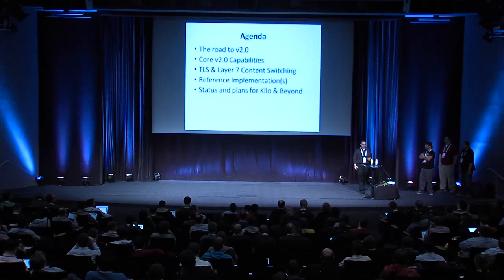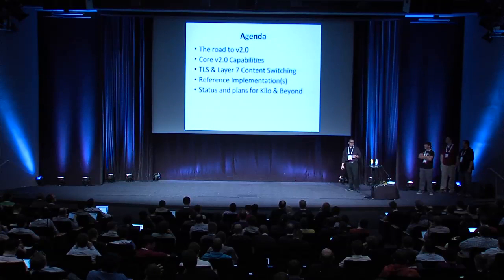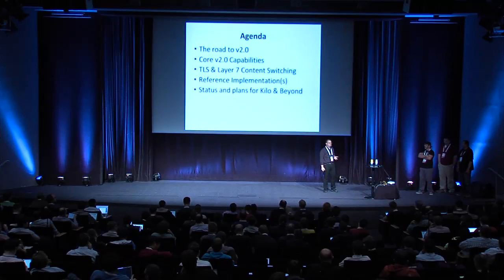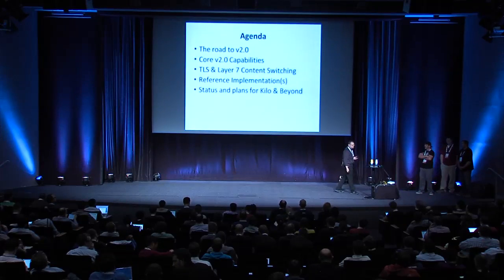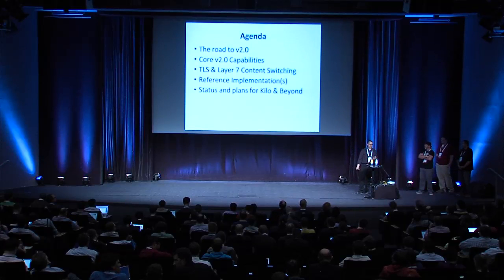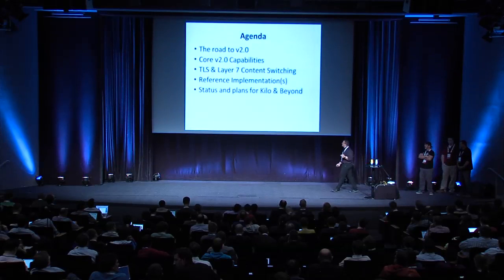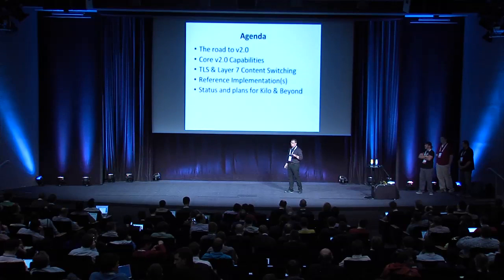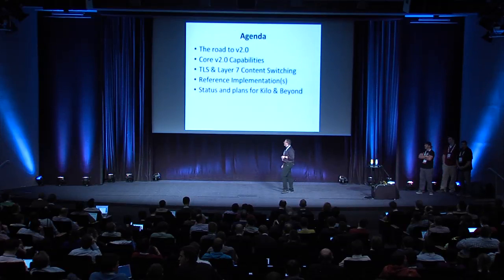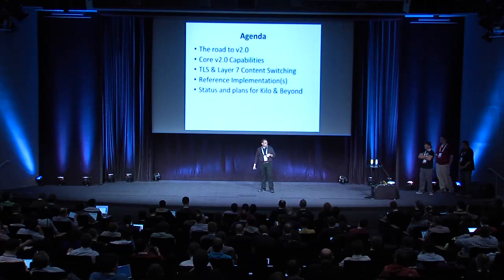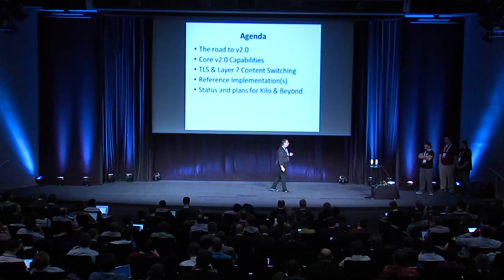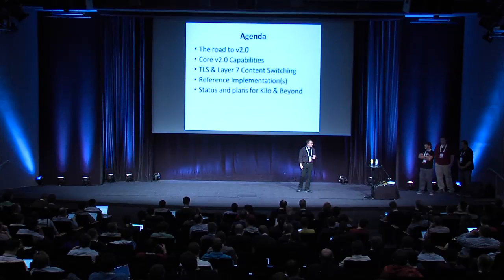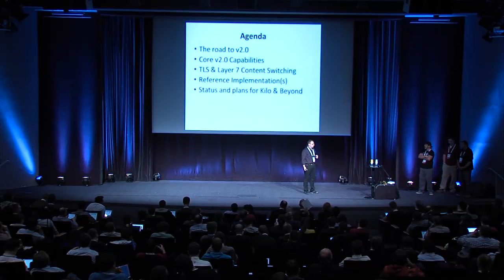We'll talk a little bit about what led us to do the V2 API, a little bit about the process and what are the key features that we put into version 2. We'll cover the core capabilities, the core API, and the key requirements were to do TLS termination in layer 7. Then we'll switch to Phil and Brandon who will talk about the reference implementation, and Doug will summarize the current status.